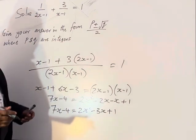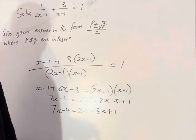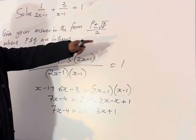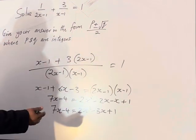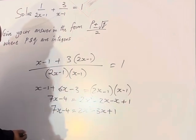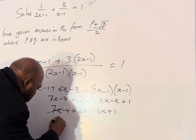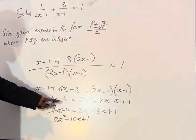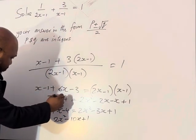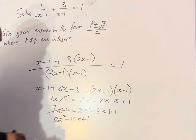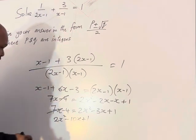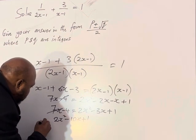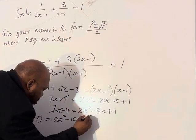So we have 7x - 4 = 2x² - 3x + 1. Now let's take everything to the right hand side so we can have a quadratic equation equal to 0, then we can use the almighty formula. Remove 7x from both sides, we'll have 2x² - 10x + 1. Add 4 to both sides, this will go, equals plus 1 plus 4 which is 5.